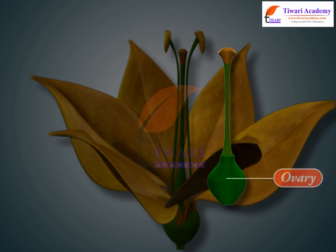The nucleus of the functional megaspore divides mitotically to form two nuclei which move to opposite poles, forming a two-nucleate embryo sac. Two more mitotic nuclear divisions result in four-nucleate and later eight-nucleate stages of the embryo sac. Then, cell wall is laid down, leading to organization of the female embryo sac.